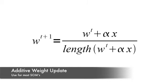Here you see the equation used to update the weight matrix for the self-organizing map when the additive method is used. The variable wt represents the weight of the winning neuron, and the result of the equation is the new weight. The variable x is the training vector presented to the neural network, and the variable alpha is the learning rate that specifies the speed at which we want learning to occur. Generally, the additive method is what you will want to use to update a self-organizing map.